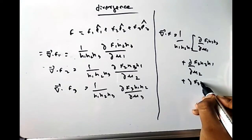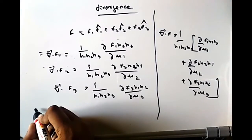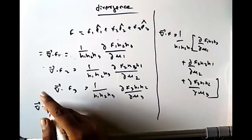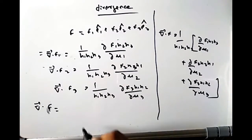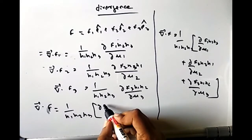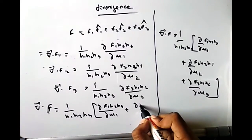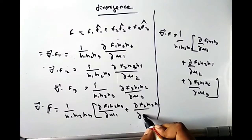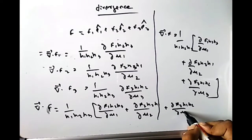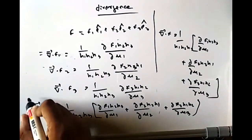Combining all terms, the divergence of F is: div F = (1/h₁h₂h₃) [∂(F₁h₂h₃)/∂u₁ + ∂(F₂h₃h₁)/∂u₂ + ∂(F₃h₁h₂)/∂u₃].